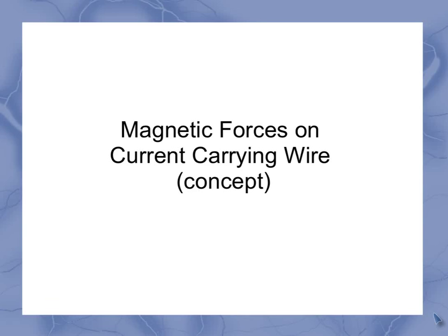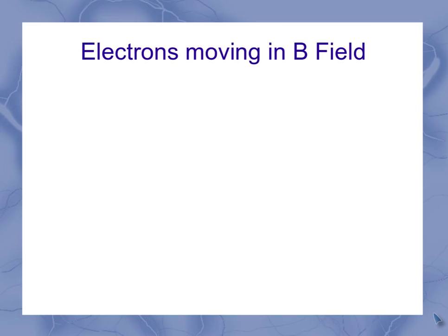So now we're going to look at the concept for magnetic forces on current carrying wires. We're going to start by our earlier concept of looking at electrons moving in a magnetic field. The equation we had for that was that the magnetic force was equal to q v cross b.